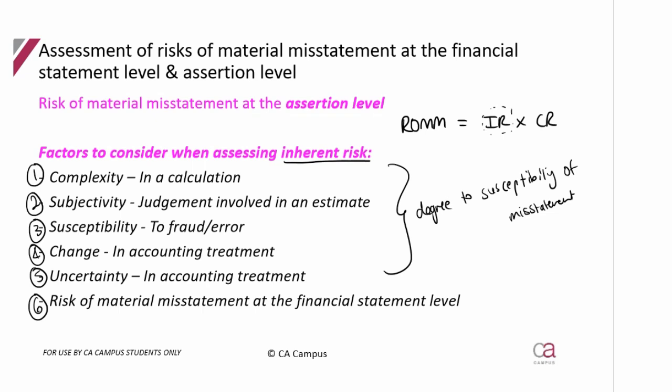So when you are reading a scenario and they start to discuss a specific class of transaction or account balance, you automatically start to think there may be risks around this balance or class of transaction. You then need to look for any of these factors: complexity, subjectivity, susceptibility, change, uncertainty, or risks at the financial statement level, and based on those you can determine if you believe it to be a higher risk or not.